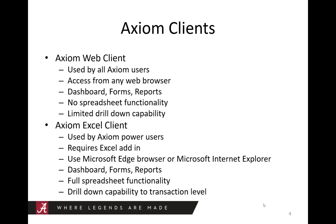The second type of Axiom client is the Axiom Excel client. This client will be used predominantly by Axiom Power users, for example, college business officers. The Excel client requires an Excel add-in that must be installed on your computer. To install the add-in requires administrator rights, so please contact your IT support if you need assistance. If you plan to access the Excel client, you must begin your Axiom session in the web client using either Microsoft Edge or Internet Explorer, then you will be able to launch the Excel client. The Excel client also features dashboards, forms, and reports, with full spreadsheet functionality and drill-down capability to the transaction level.